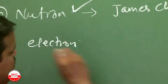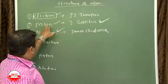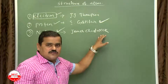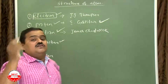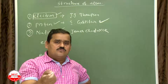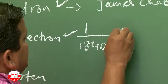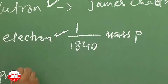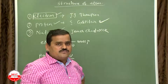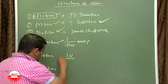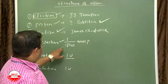Now let's discuss the properties of electron, proton, and neutron. Electron is discovered by J.J. Thomson, proton by E. Goldstein, and neutron by James Chadwick. The mass of the electron is almost negligible — it is 1/1836 or 1/1840 times the mass of a proton. The mass of a proton is approximately 1 u (unified mass unit), and the mass of a neutron is almost the same as the proton, also 1 u. So compared to proton and neutron, the electron mass is negligible.